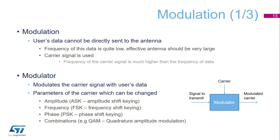Modulation: user data cannot be directly sent to the antenna because the frequency of this data is quite low and an effective antenna would be very large. Therefore, a carrier signal is used. The frequency of the carrier signal is much higher than the frequency of data. The modulator modulates the carrier signal with user data. There are many types of modulation schemes. Among the basic ones: Amplitude Shift Keying (ASK), Frequency Shift Keying (FSK), Phase Shift Keying, and combinations such as Quadrature Amplitude Modulation (QAM).